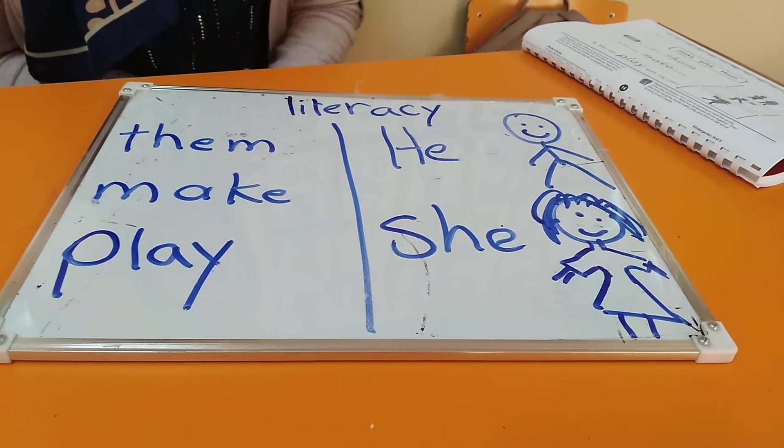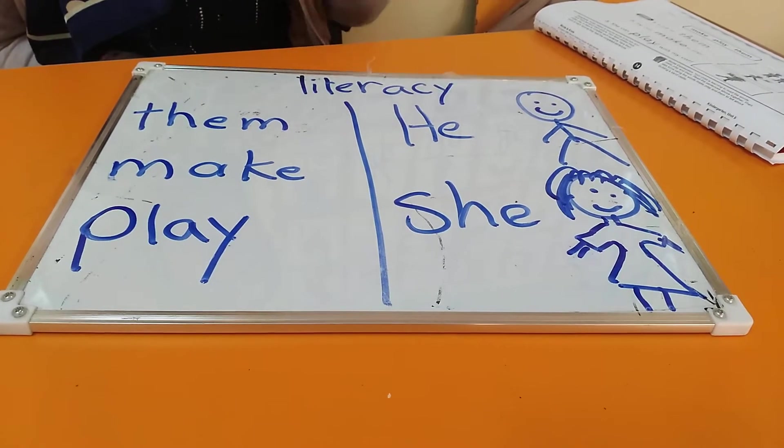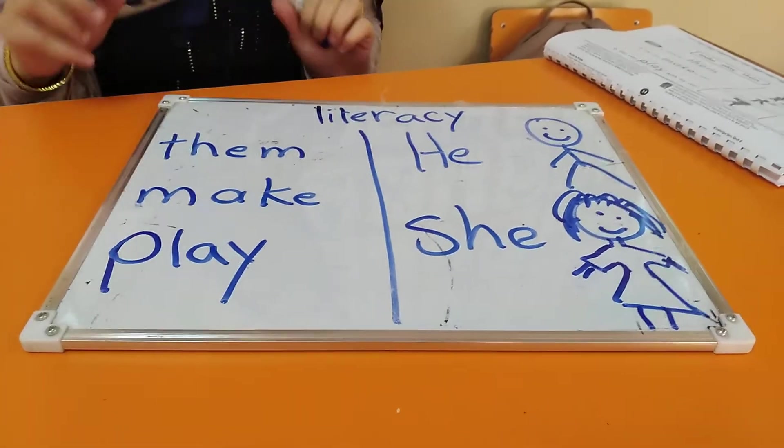Today, our lesson is about sight words. So, we're going to take letter C. Good job. So, we have five words we have to read.